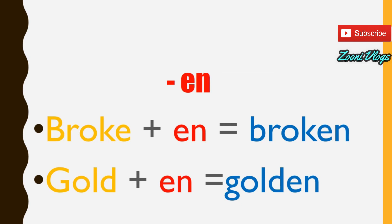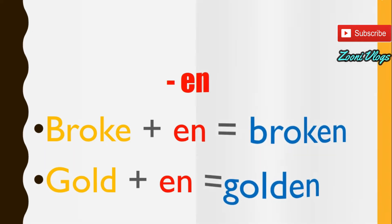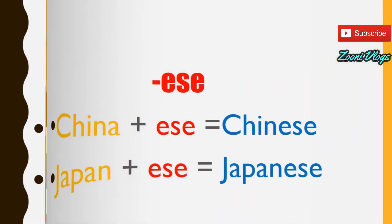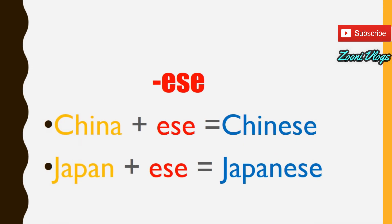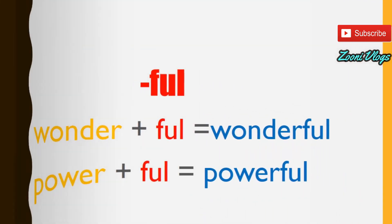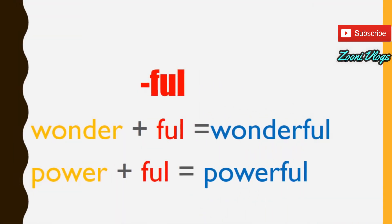The suffix '-en' gives us 'broken' from 'broke,' and 'golden' from 'gold.' The suffix '-ese' gives us 'Chinese' from 'China' and 'Japanese' from 'Japan.' The suffix '-ful' gives us 'wonderful' and 'powerful.'